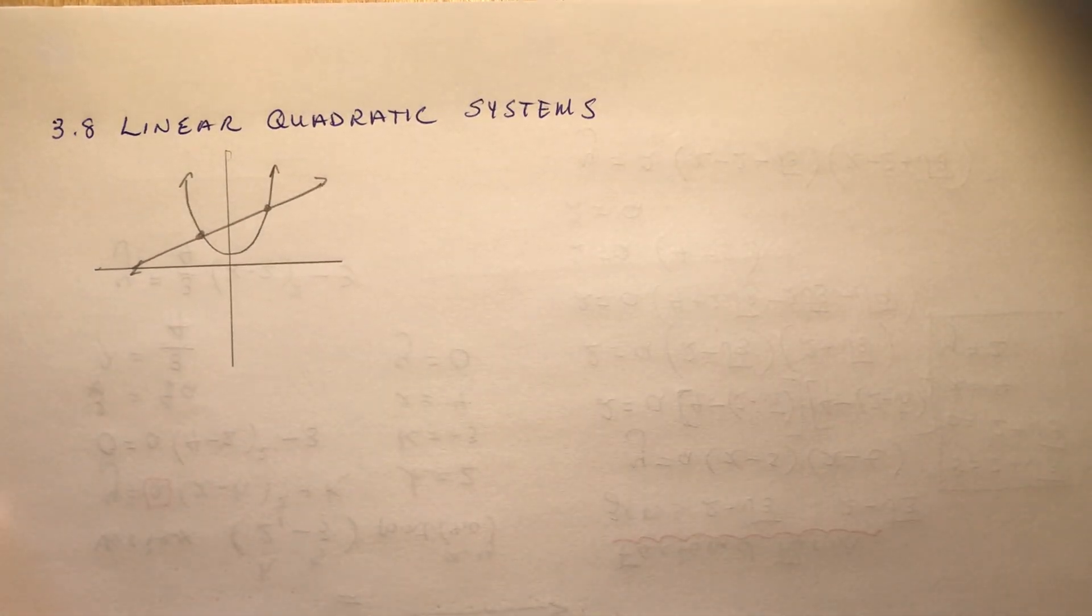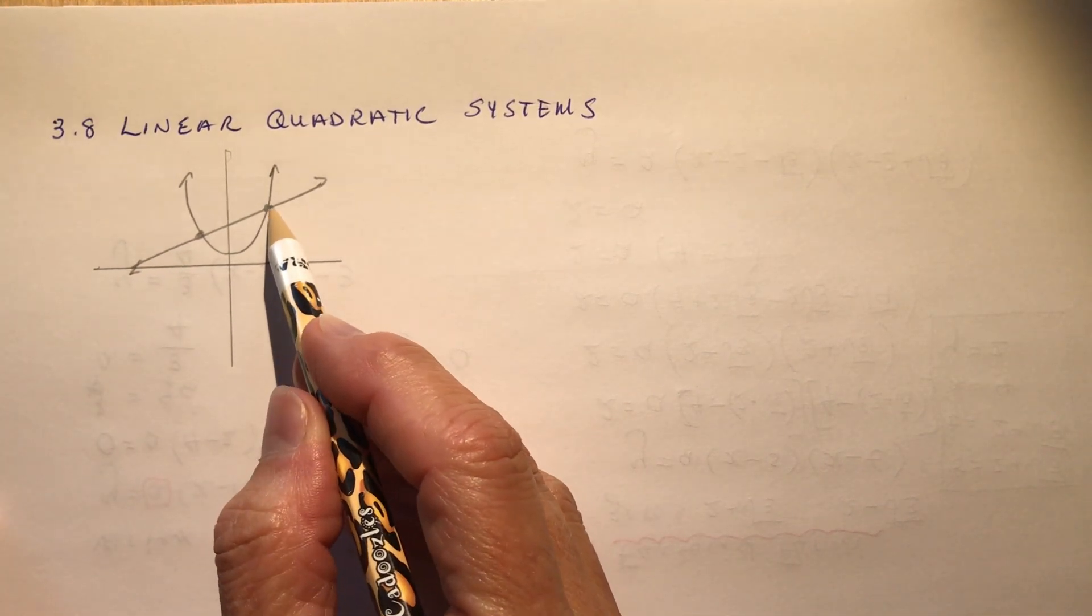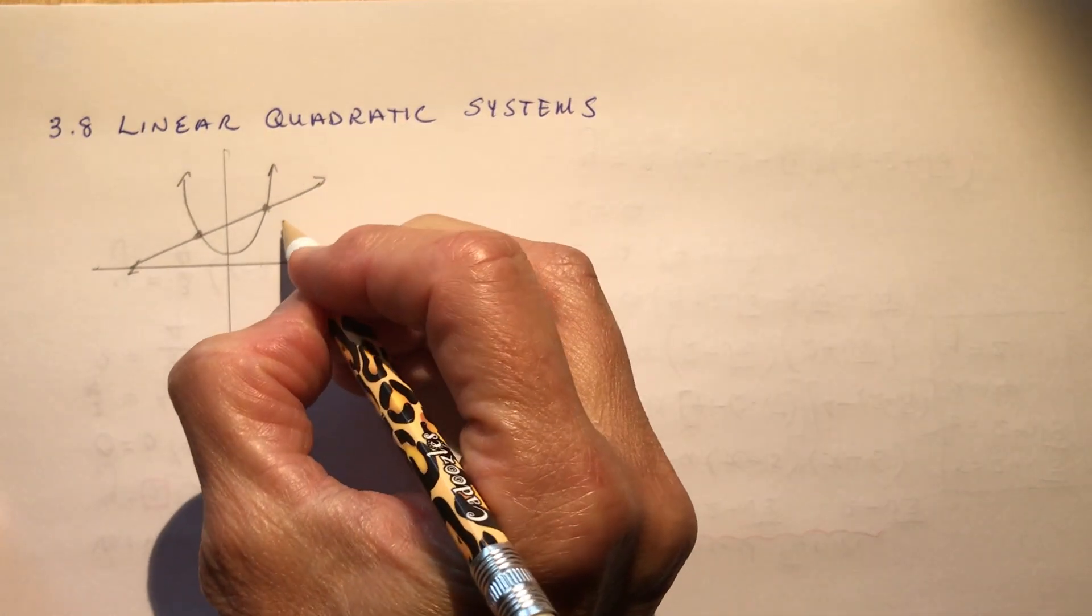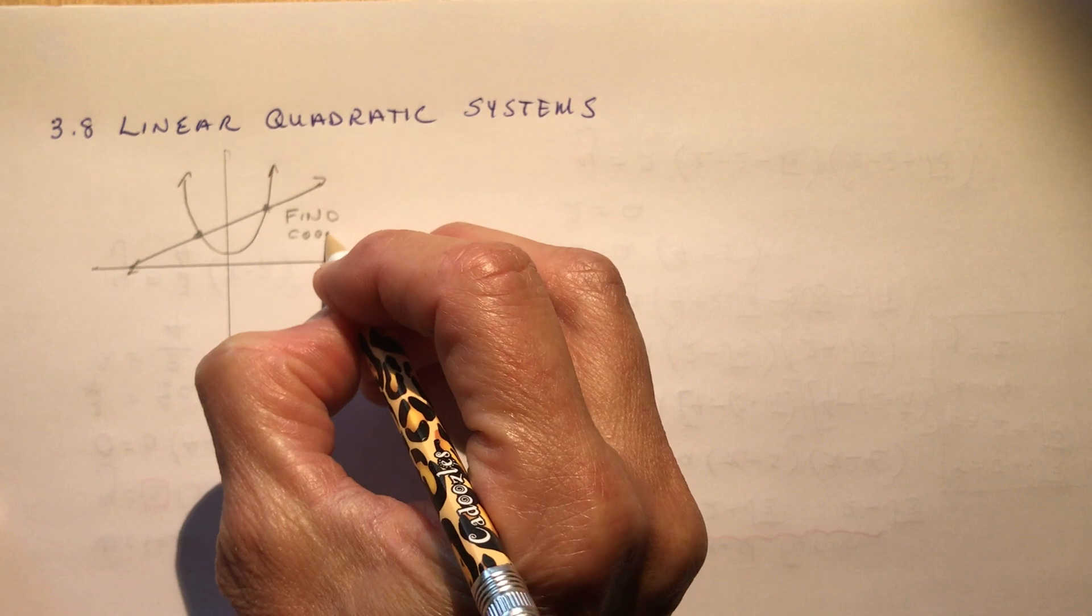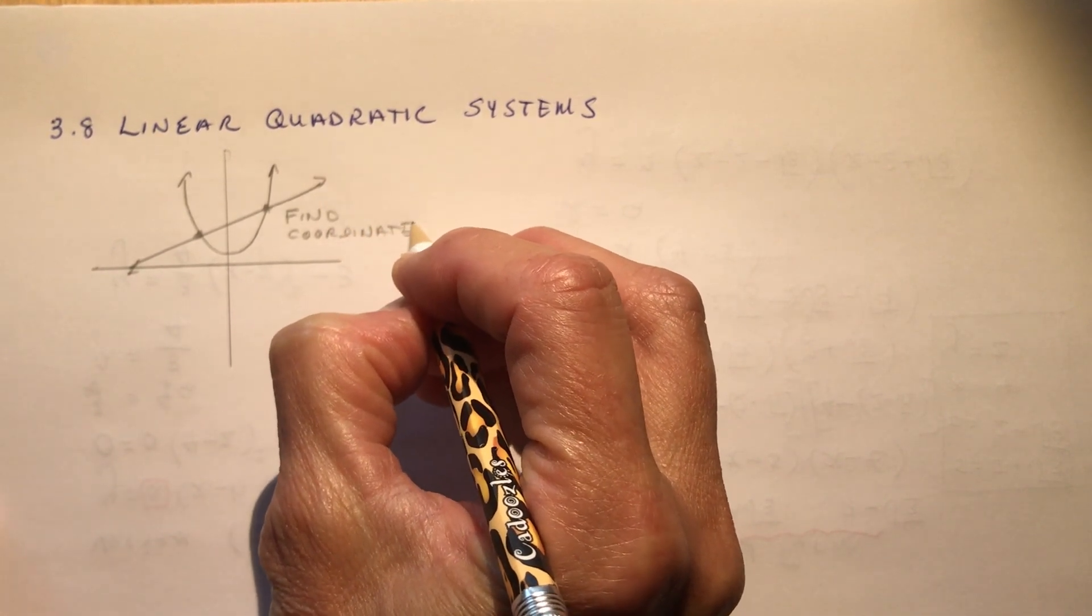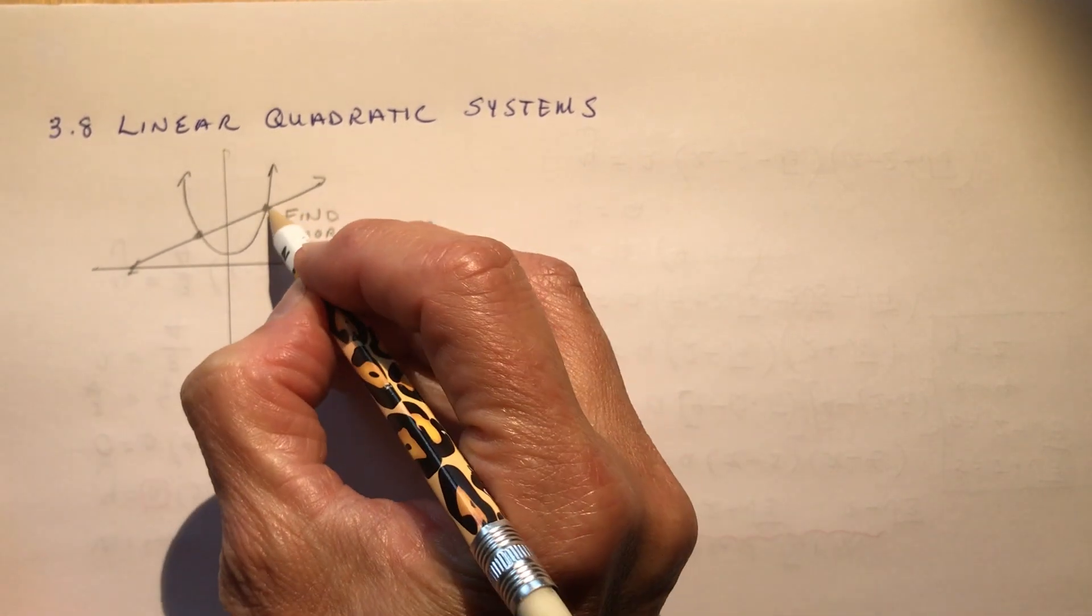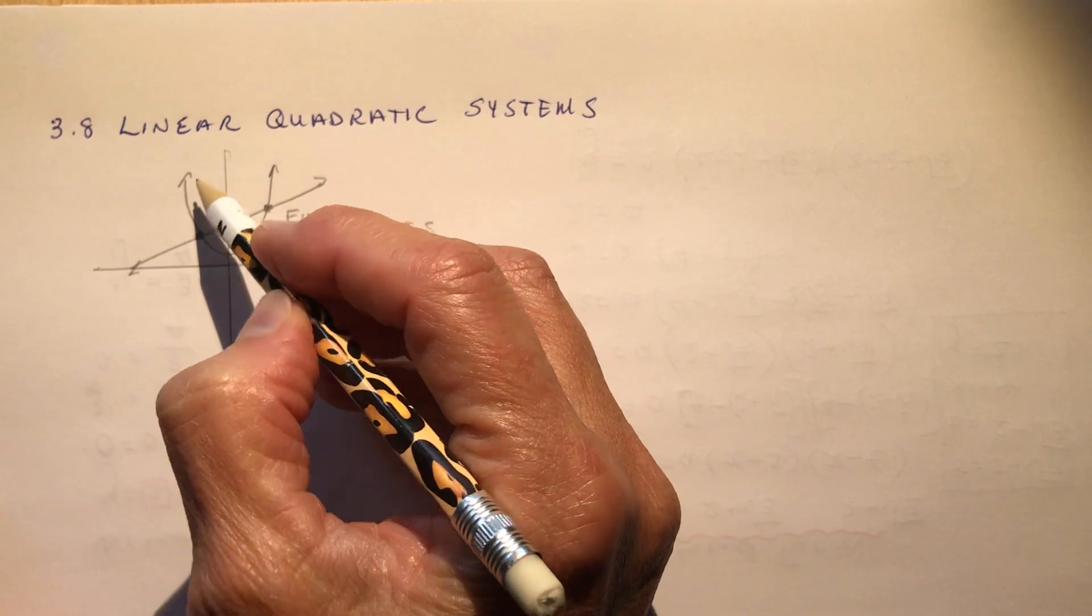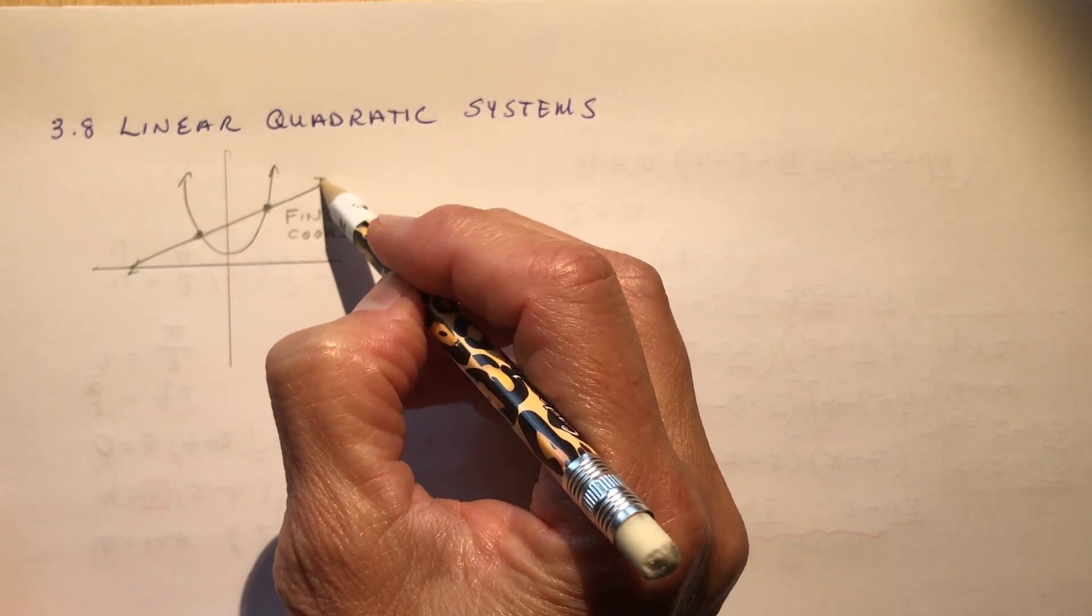The key thing is when you're solving these is that you don't just find an x value. You have to find the coordinate, right? So find coordinates, just like you did with linear systems. Remember you found the x's, either you use substitution or elimination or comparison. So you want to find where is the height of this function the same as the height of this function.